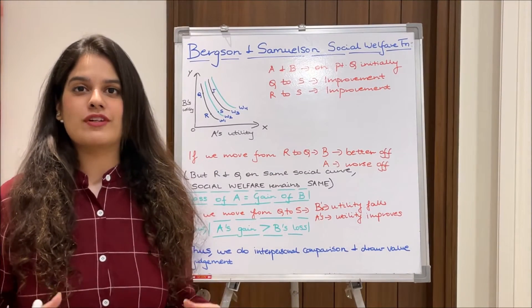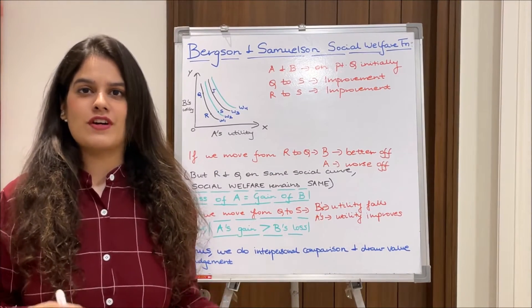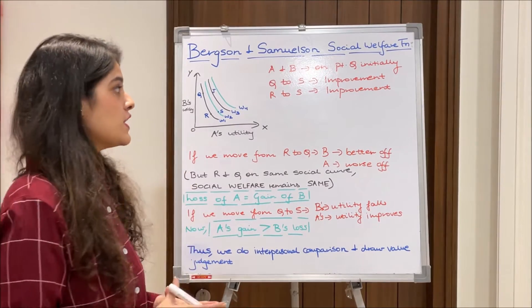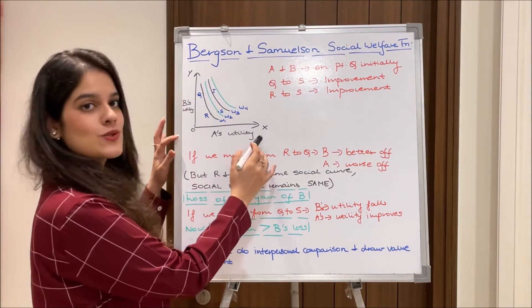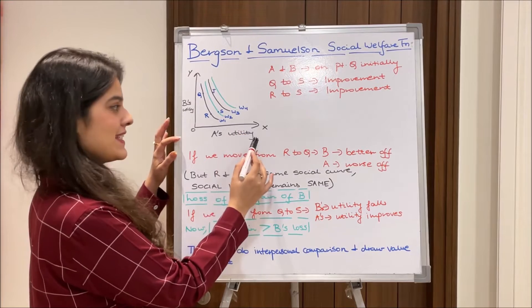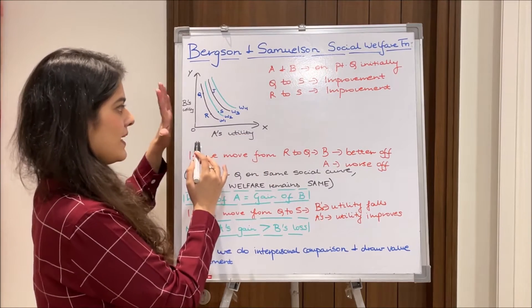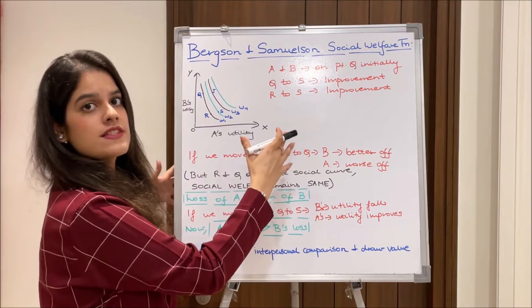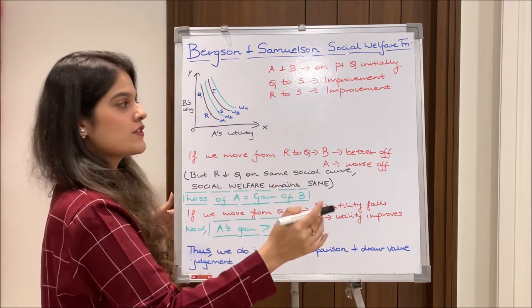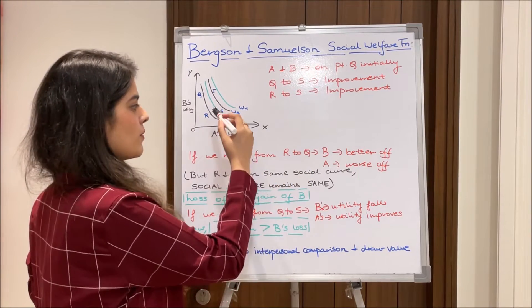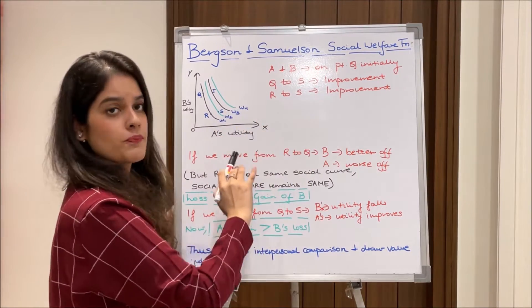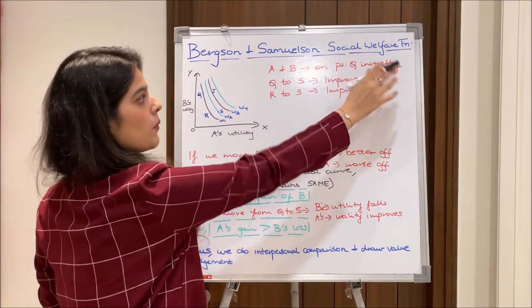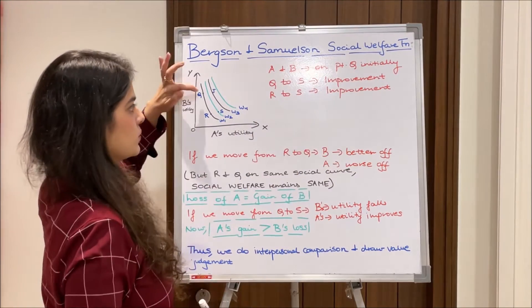Moving ahead to the main graphical part, which gives the whole crux of this function. We measure A's utility on the X-axis and B's utility on the Y-axis. We have four social welfare curves — similar to indifference curves — in the form of W1, W2, W3, and W4. Initially, A and B are both at point Q on the first curve W1.